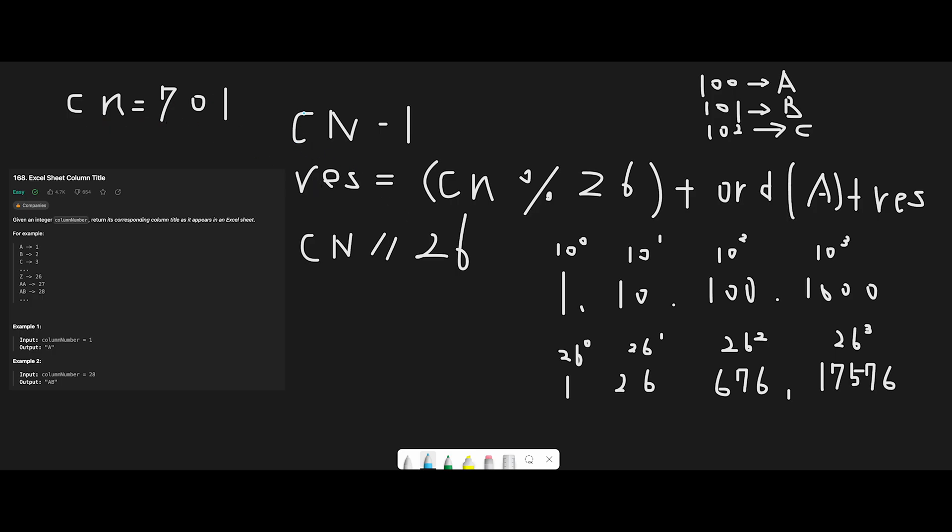I already wrote down the algorithm here, so let's look at it one by one. First step, we subtract minus one from current column number. There are 26 alphabets in the world, right, from A to Z.